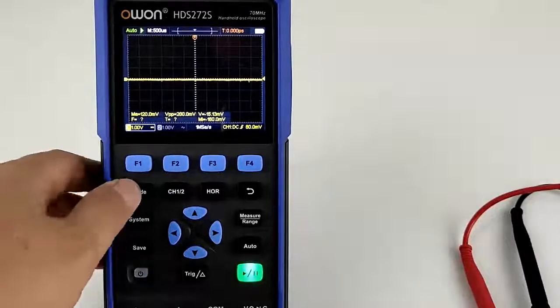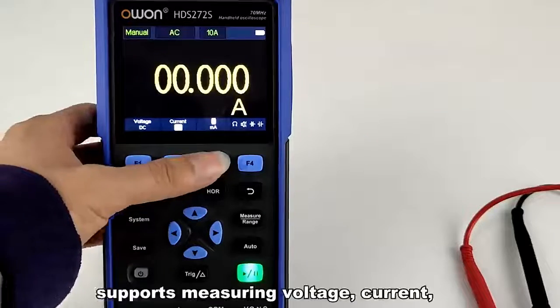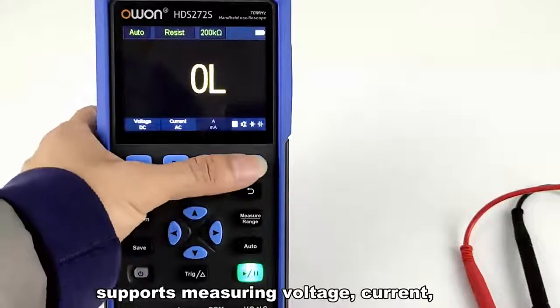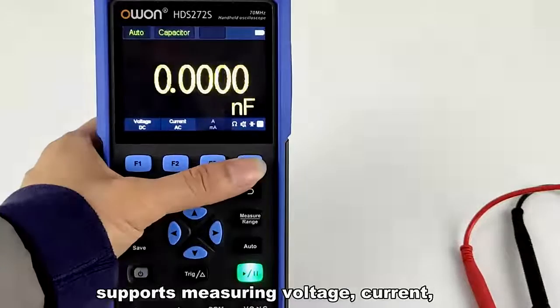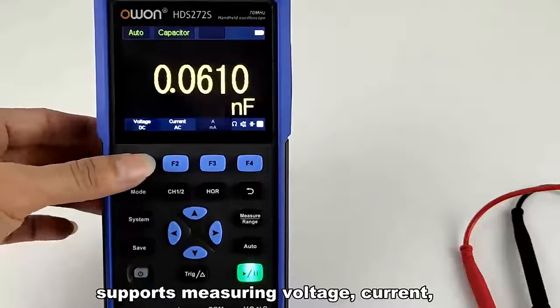20,000 counts multimeter with auto range. Supports measuring voltage, current, resistance, diode, capacitance, and continuity test.